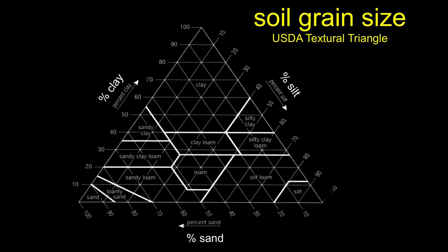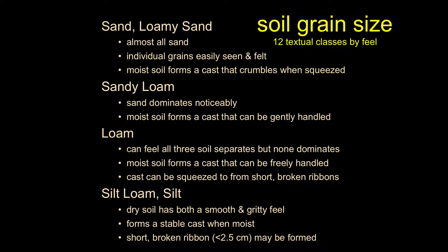This is the famous soil triangle — essentially a three-sided graph with our three categories. Anything significantly bigger than sand we'd just call rock, pebble, or cobble. We're talking about the types of materials that plants could be growing in, with roots intimately associated with the soil. It goes from zero to 100 on each axis, and this is an arbitrary breakdown, but using it you can come up with a term for soil with a given texture.